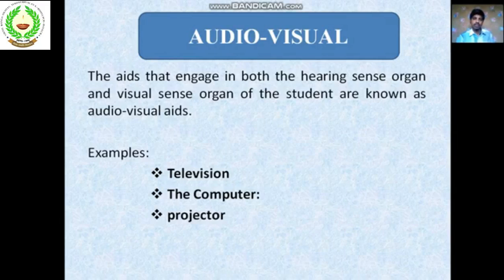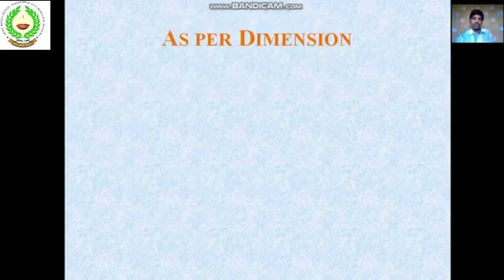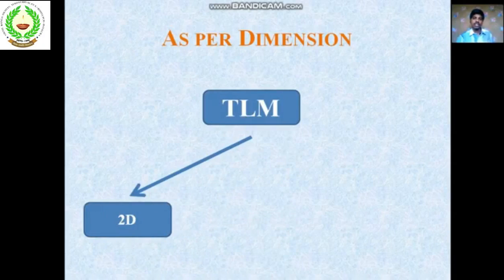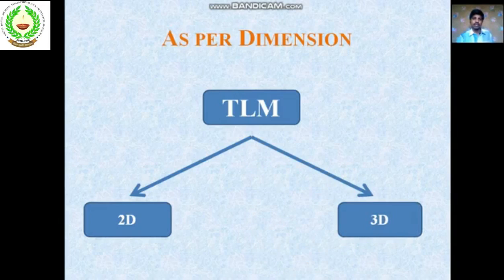You can also divide TLM into two parts as per dimension. The first one is 2D — two dimensional — which has two dimensions, such as pictures, charts, and maps. The other one is 3D — three dimensional — which has three dimensions, such as models, specimens, and globe. Three dimensional is more useful than two dimensional.